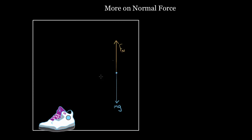For instance, if we wanted to find the normal force for a shoe of mass m, we can use Newton's second law. We'll say acceleration equals net force divided by mass. Since these are vertical forces, I'm going to consider the acceleration and net force in the vertical direction. If the shoe is just sitting on the ground at rest and not changing its velocity, the vertical acceleration is going to be zero.